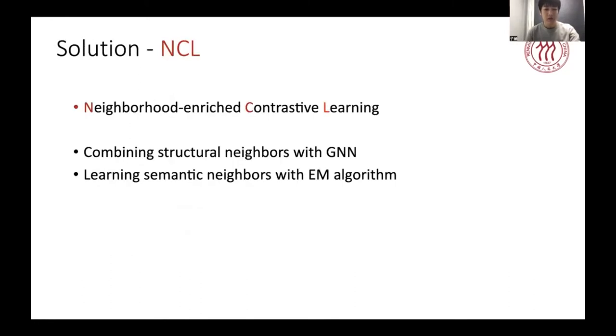Here, we go into the approach proposed by this work, NCL, which is short for neighborhood-enriched contrastive learning. It contains two parts: combining contrastive learning within the propagation of GNN, and learning semantic neighbors with EM algorithms.